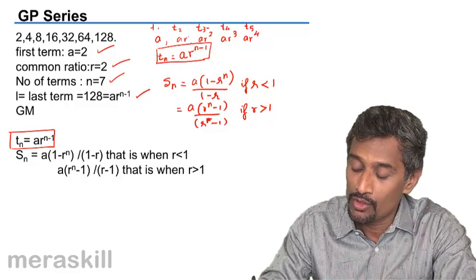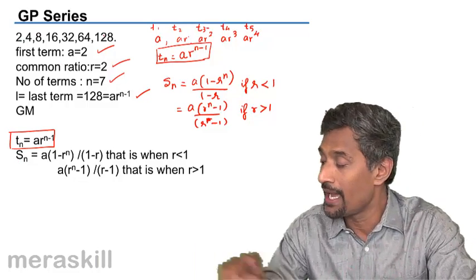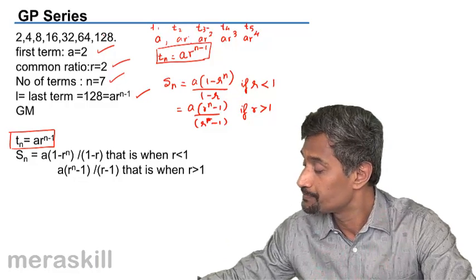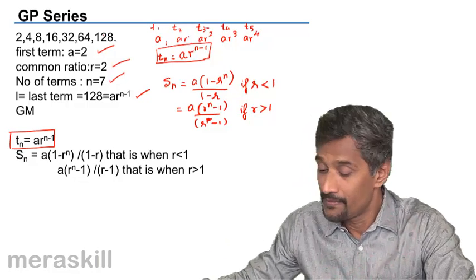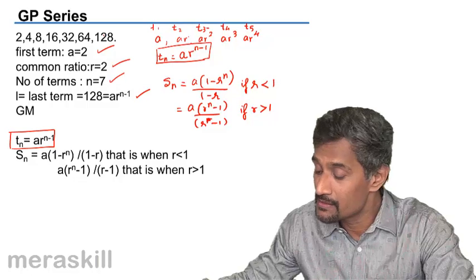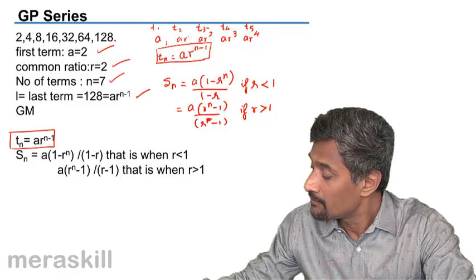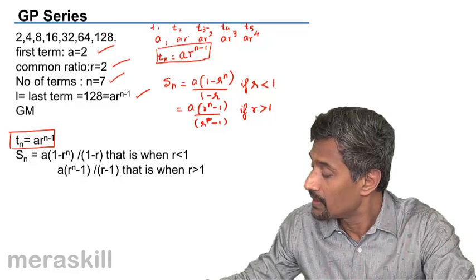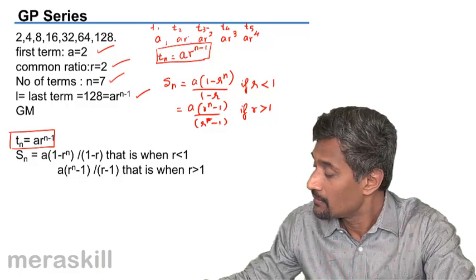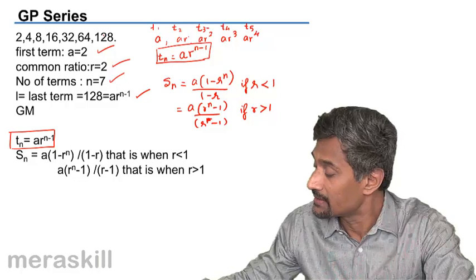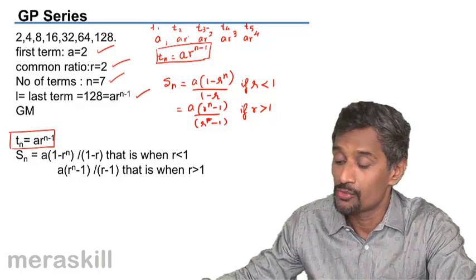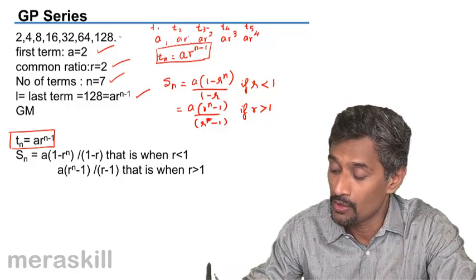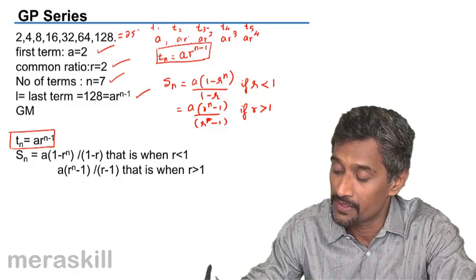For SN, if we add all these terms: 2 plus 4 plus 8 plus 16 plus 32 plus 64 plus 128, we get 254. Adding all these terms gives us 254.